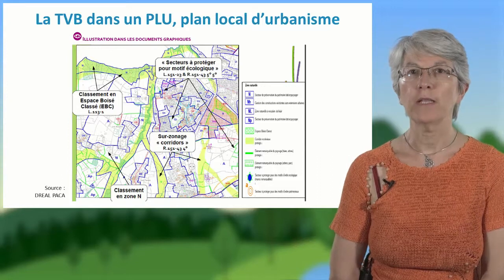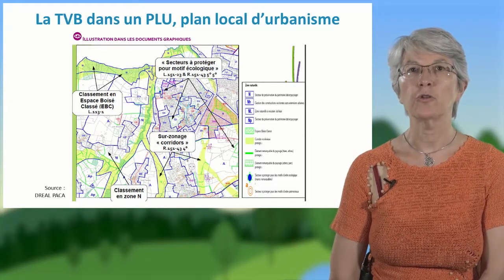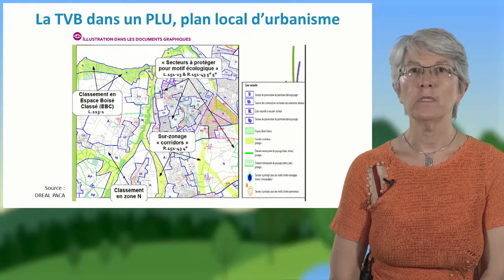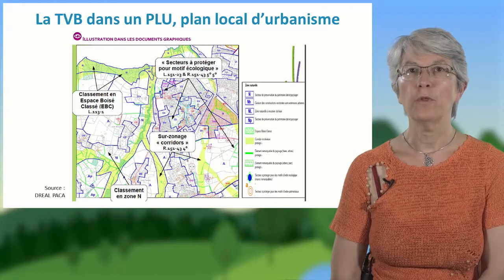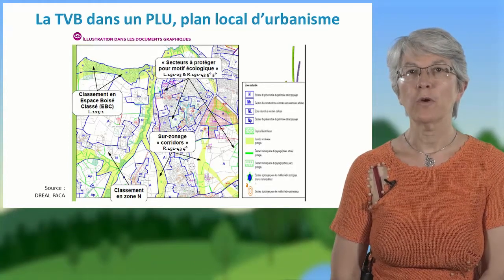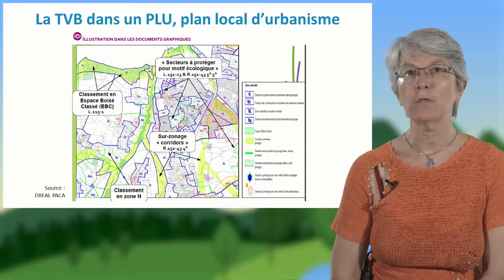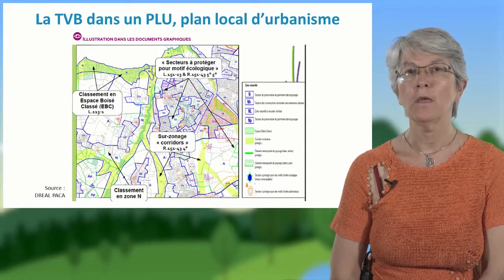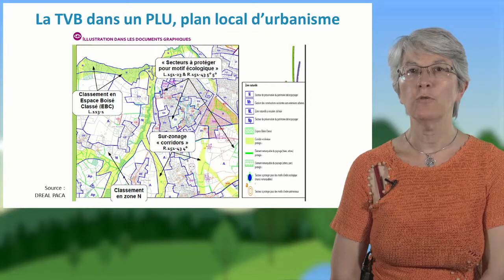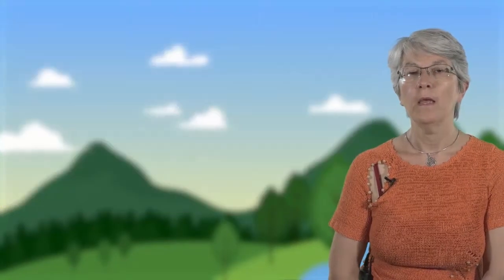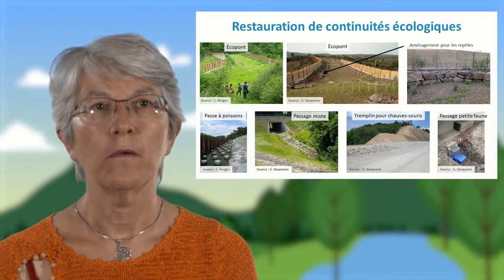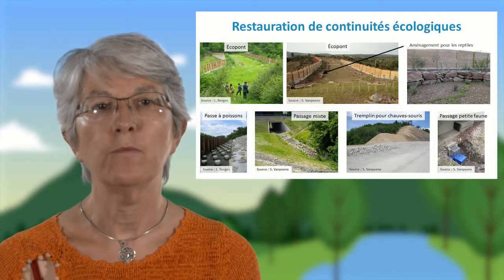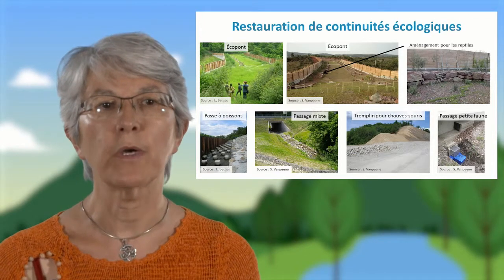La trame est dessinée en vert et en jaune, et des zonages ou des outils d'urbanisme s'appliquent. Par exemple au niveau des zonages, le règlement va préciser des conditions particulières en termes d'inconstructibilité ou de caractéristiques des clôtures. La trame verte et bleue a pour objet de maintenir les continuités écologiques, via les documents d'urbanisme, mais aussi de les restaurer.